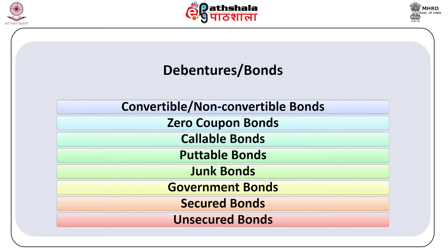If the company opts to redeem the debt on callable bonds, the holders have no option but to accept the redemption value. In case market interest rate falls below the coupon rate, these callable bonds may be called back by the company to reduce their cost of borrowing. Putable bonds are those where the holder has an option to get the bond redeemed at any time after the stipulated period. If the coupon rate is less than the prevailing market interest rate, the bond holder may get the bond redeemed and reinvest the amount elsewhere at the higher market rate. Junk bonds are speculative in nature — high risk and high yield bonds with a high coupon rate and low credit rating. They are generally issued at deep discount price compared to face value, and therefore generate huge returns on redemption.